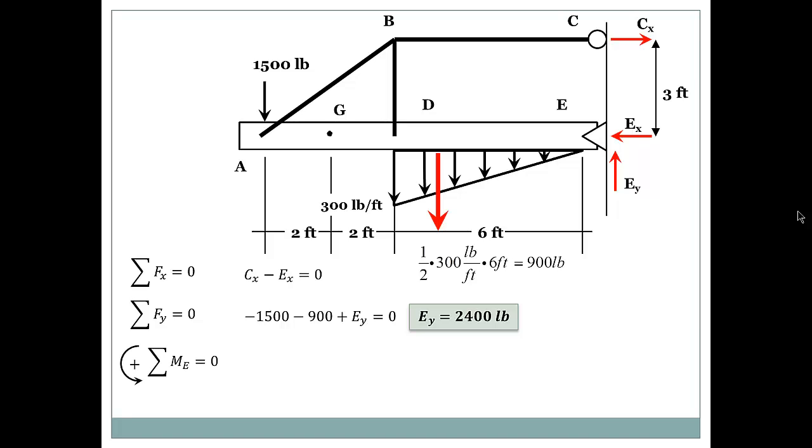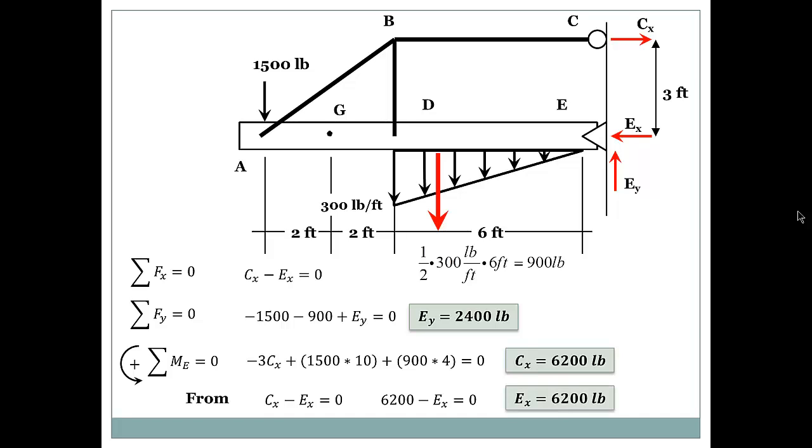And if we take the summation of the moments about point E, we get minus 3 CX. The 3 is the distance and the CX is the force. Then plus 1500 times 10, which is the total length of the beam. Then plus 900 times 4. From that we get CX equals 6200. And from CX minus EX equals 0, we can substitute CX to be 6200 and we can solve for EX to be 6200.